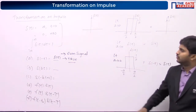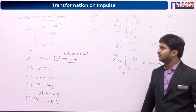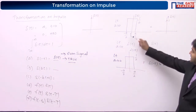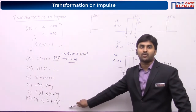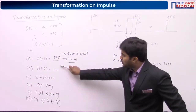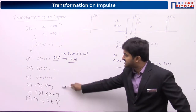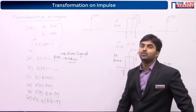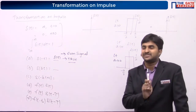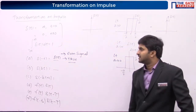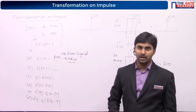These derivations or proofs are not required. If you are able to understand all these six relations that we are having, it is more than sufficient. No derivations are required as far as the examination is concerned. Once you have understood the first one, you will understand all of them.